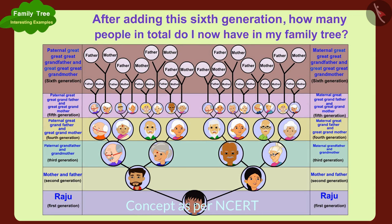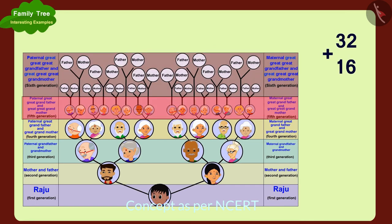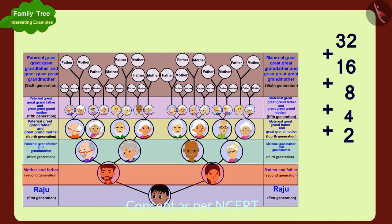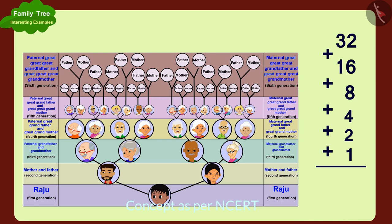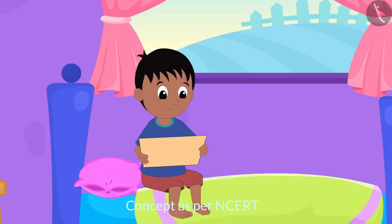Children, can you find a solution to Raju's question too? If you want, you can stop the video and find the answer. First, we will write down the number of people present in every generation. Then, to find out the total number of people in Raju's family tree, we only have to add the number of people from all these generations. In this way, Raju's family tree has a total of 63 people.